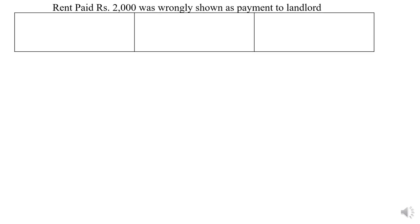This is the first entry. Rent paid rupees 2,000 was wrongly shown as payment to landlord. As usual, first we write the correct entry in the first column, the wrong entry in the second column, and the rectifying entry in the third column. The correct entry is: rent account debit to cash account, rupees 2,000.